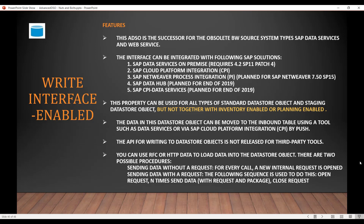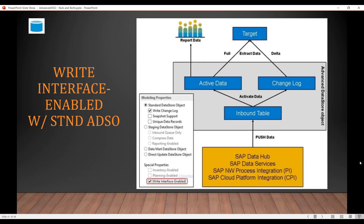Now let's look at Write Interface Enabled with a standard ADSO. With a standard ADSO you will have the three tables — changelog is optional, but let's assume changelog is there. All these interfaces — SAP Data Hub, Data Services, PI, and CPI — will push the data to the inbound table, and from there the process is a regular compression or activation process.